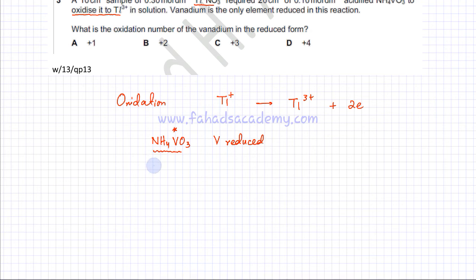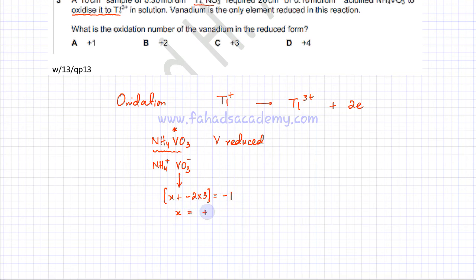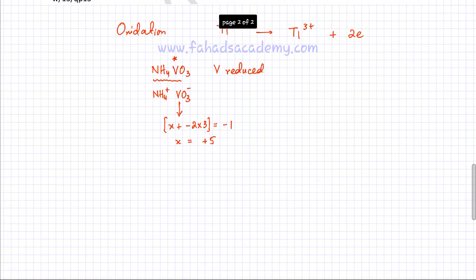Before writing the reduction equation, I need to figure out the initial charge on V. NH₄VO₃ dissociates into NH₄⁺ and VO₃⁻. So for VO₃⁻, taking V as X, and oxygen always has an oxidation state of −2 multiplied by 3, the individual charges must add up to −1. Solving for X, the oxidation state of vanadium comes out to be +5. So the original state of V in NH₄VO₃ was V⁺⁵.